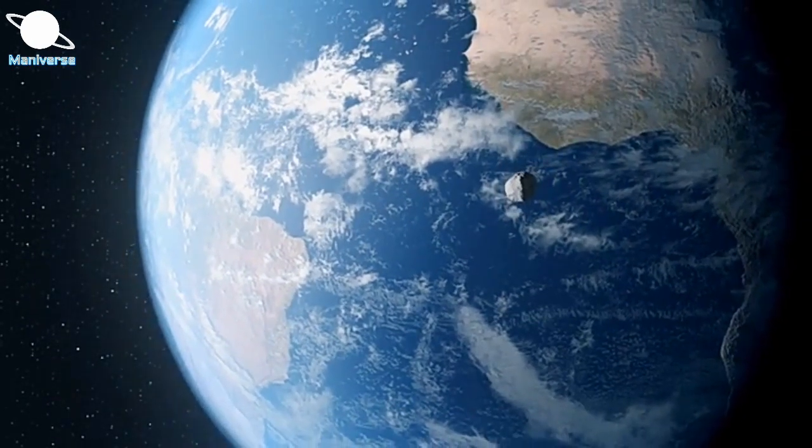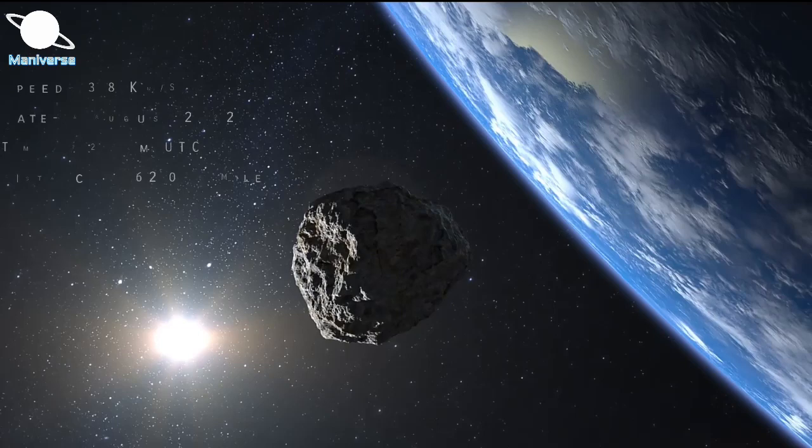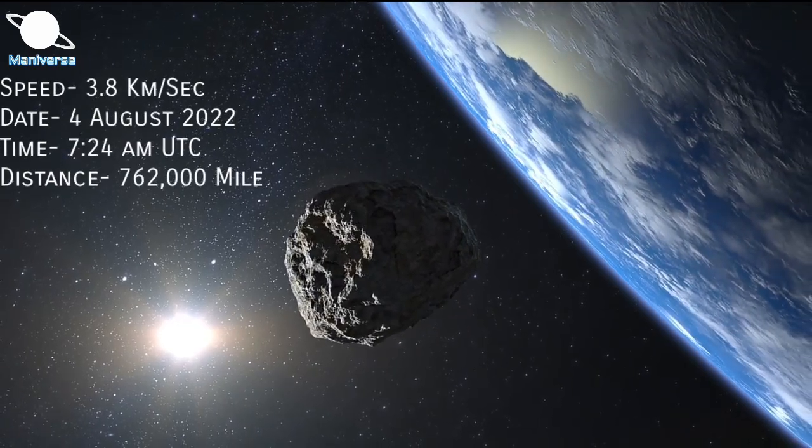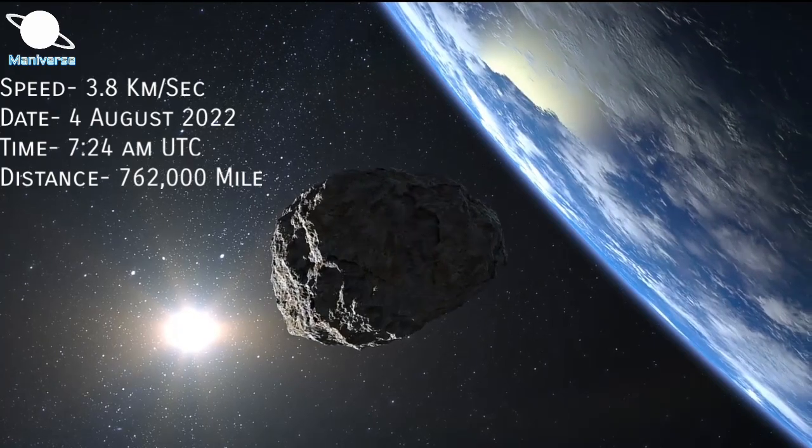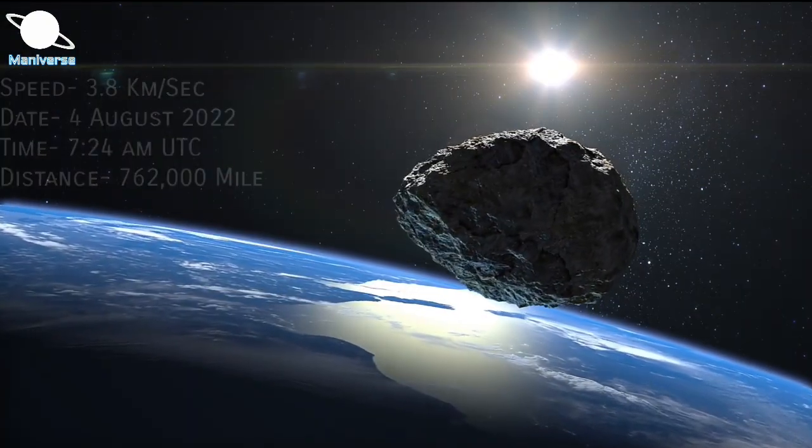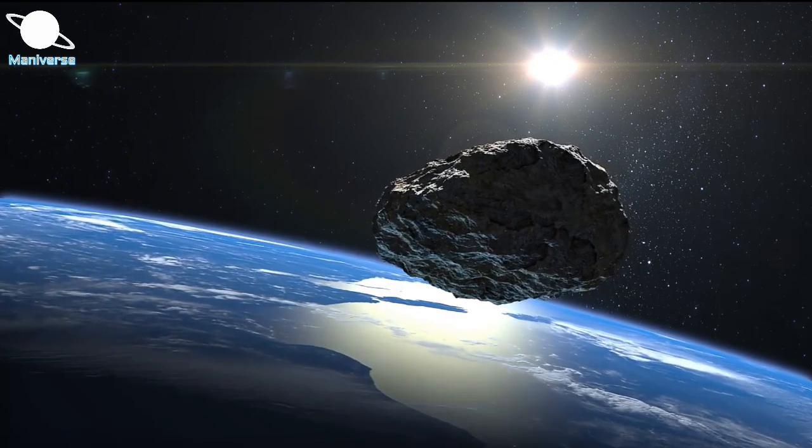This asteroid will fly past our planet a few hours after OE2. It will come close on 4th August at 7:24 AM UTC with a speed of about 3.8 km per second. Well, there is no need to worry about both asteroids. We are fully safe from them.